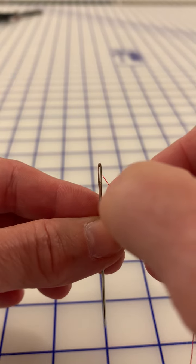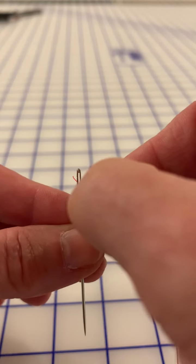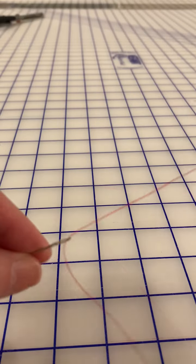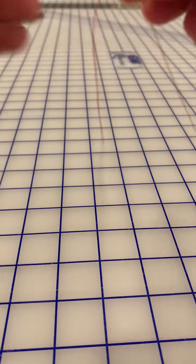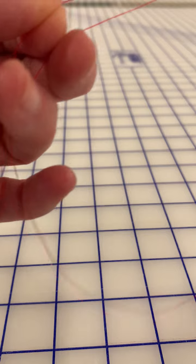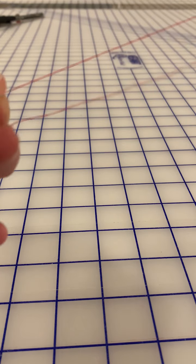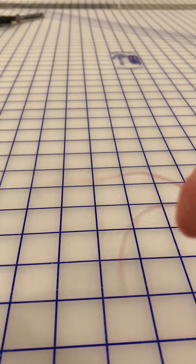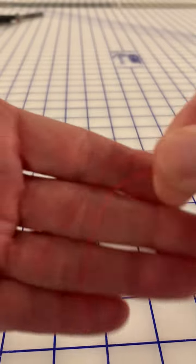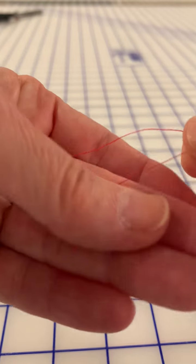So you are going to put the end of your thread through the eye of the needle, and with hand sewing, what you want to do is you want to double up on that thread. You want to pull maybe an arm's length, maybe a little more, and then you want to, as best as you can, get both of those ends together.